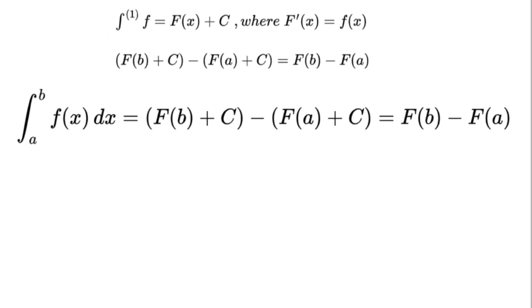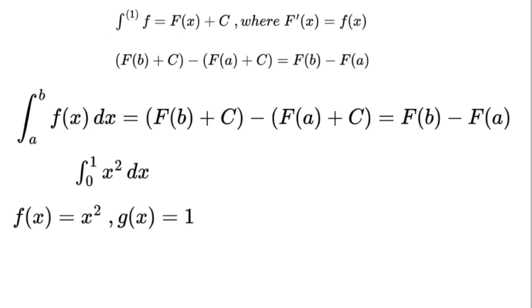Let's test it with a quick example: the integral from 0 to 1 of x squared dx. Take f(x) equals x squared, g(x) equals 1. First antiderivative: the integral of x squared dx equals x cubed over 3 plus c₀.